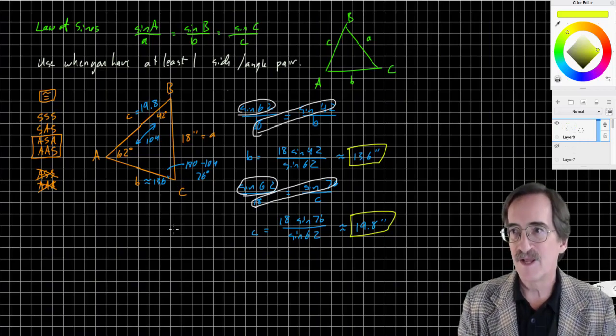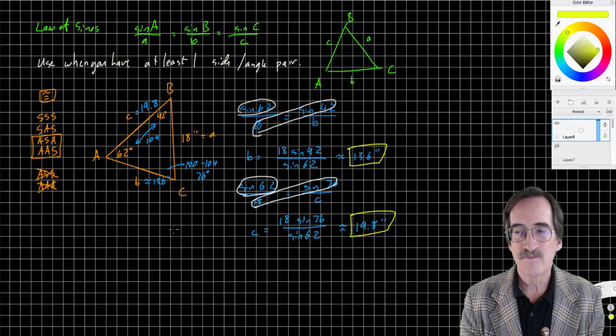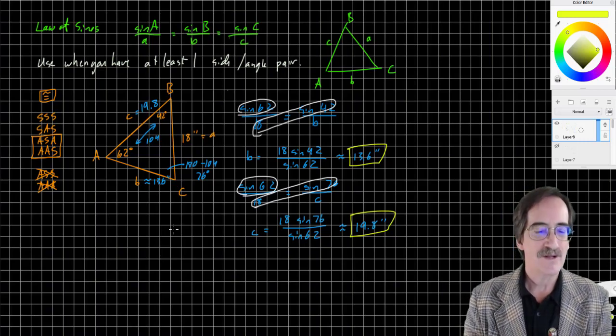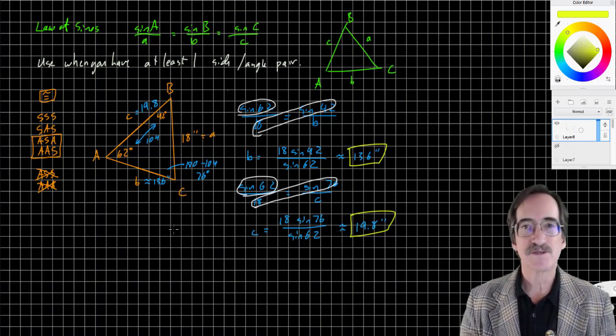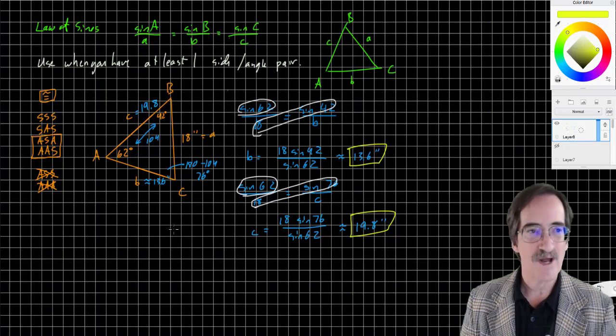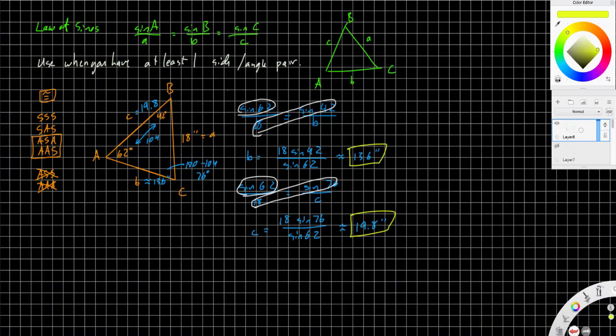This counts as an angle angle side triangle, but it's much the same for angle side angle. If you know two angles, you know three angles because you can subtract from 180. Hopefully that helps. Thank you.